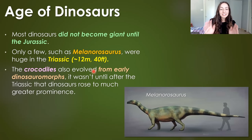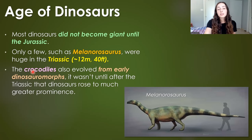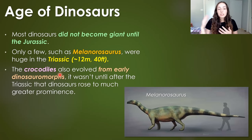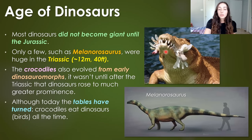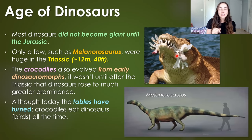Dinosauromorph does not equal dinosaur, even though it has that in the first part of its name. Crocodiles evolved from these, and it wasn't until after the Triassic period that dinosaurs actually rose to much greater prominence. So crocodiles and other Dinosauromorphs were still pretty prominent in the Triassic. It wasn't until the Jurassic and Cretaceous that dinosaurs rose above everything. Although today the tables have turned — modern dinosaurs are no match for the crocodiles.